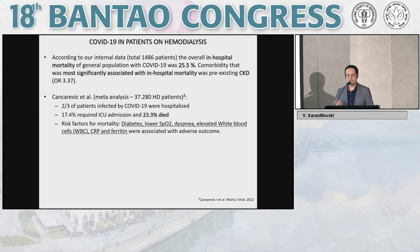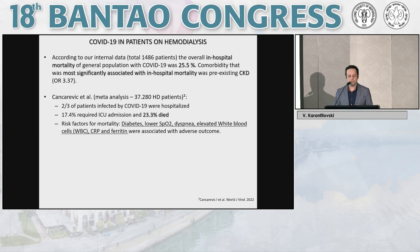According to another study performed at our clinic, including more than 140 patients, the overall in-hospital mortality of the general population with COVID-19 was 25.5%. This means that COVID-19 patients on chronic hemodialysis had a much higher mortality rate compared to the general population in our unit. In that study, the comorbidity most significantly associated with in-hospital mortality was pre-existing CKD, with an odds ratio of more than 3.3.